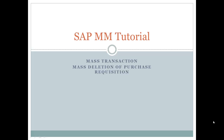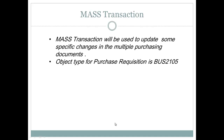Today I am going to explain the mass transaction and mass deletion of purchase requisition. Mass transaction will be used to update specific changes in multiple purchasing documents. Suppose we are having 10 purchase requisitions and we want to change the purchasing group of all of them — we can use mass transaction to update the purchasing group in all purchasing documents at a single shot.